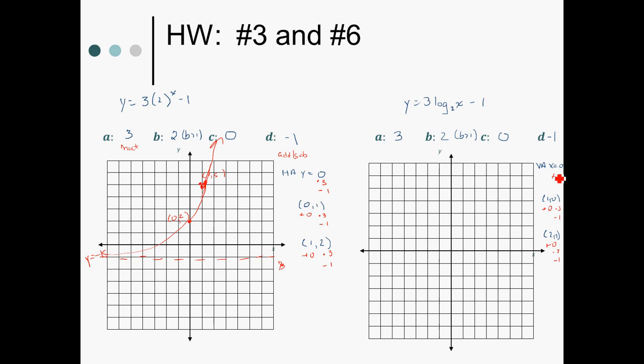Here, my vertical asymptote was x equals zero, and I added zero to it, so my vertical asymptote does not move.